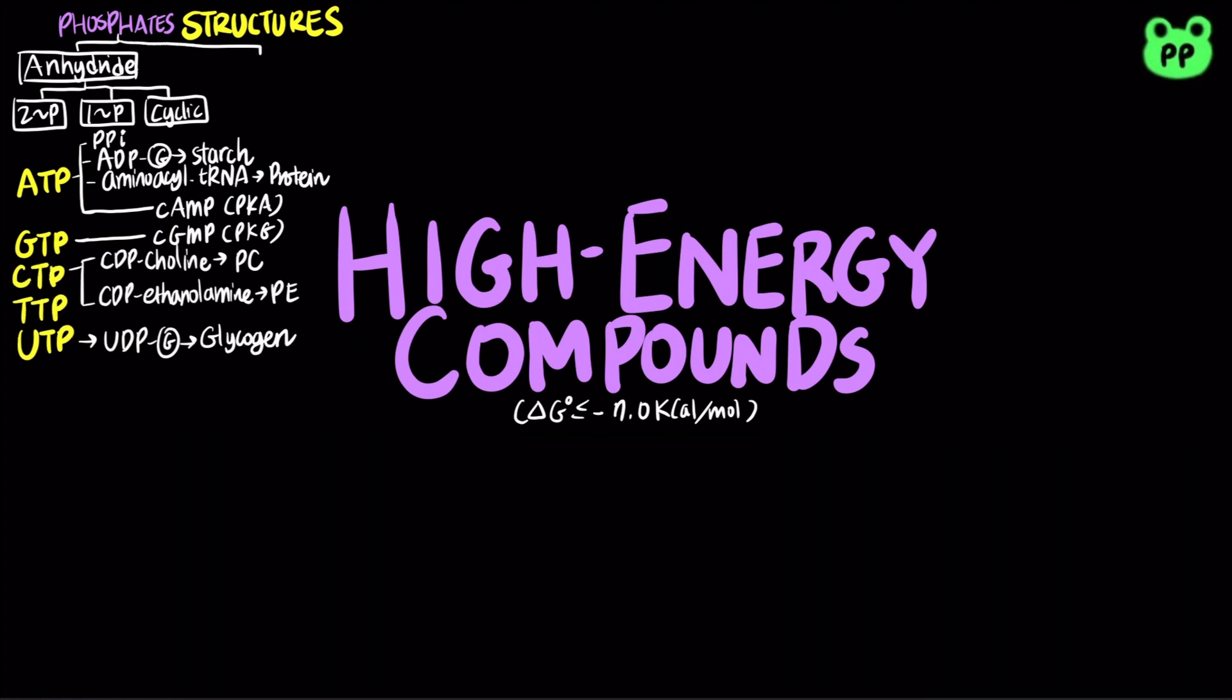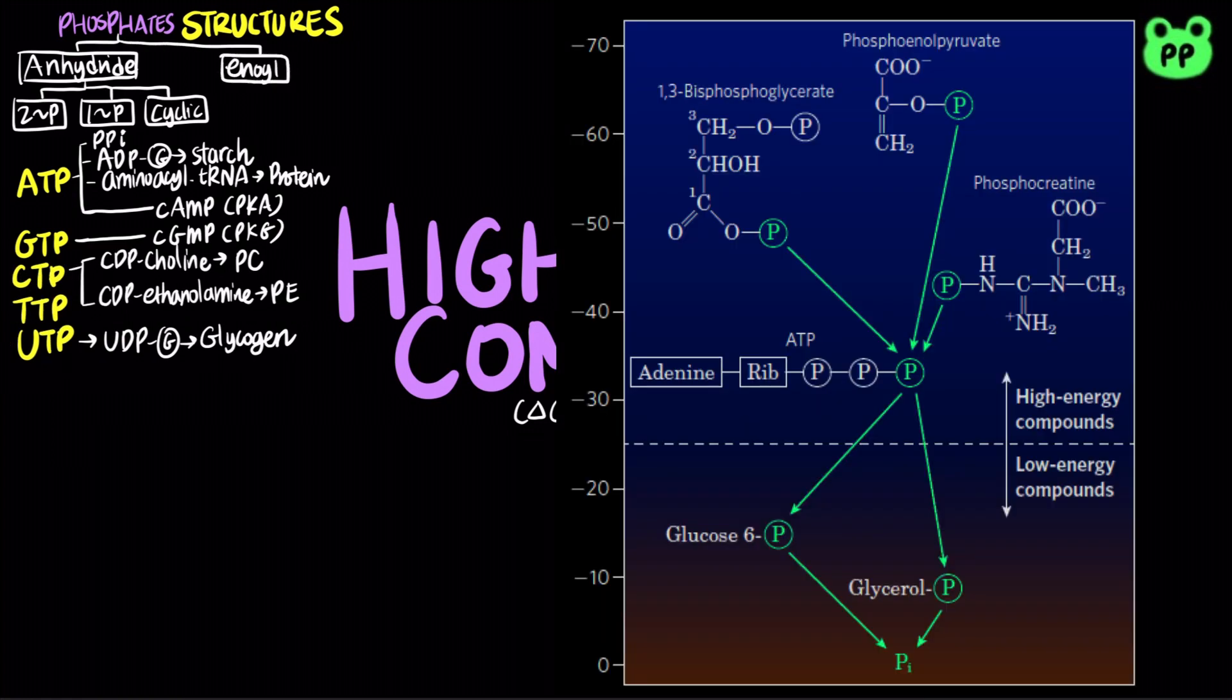ATP is actually not the most high energy compound. An intermediate of glycolysis known as phosphoenolpyruvate contains enol phosphate that has the highest energy among biological high energy compounds. Another intermediate of glycolysis known as 1,3-bisphosphoglycerate contains high energy acyl phosphate group, which is also found in aminoacyl tRNA.